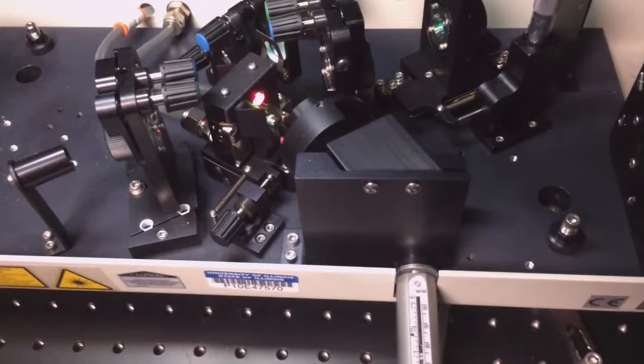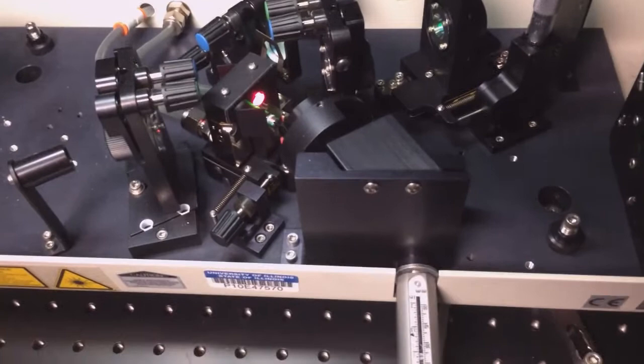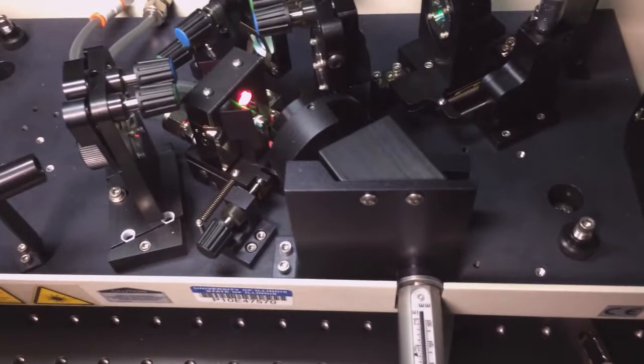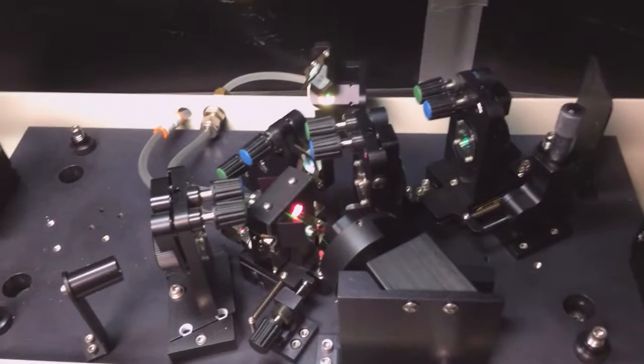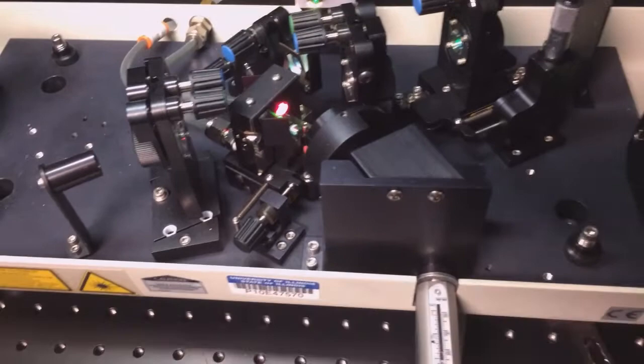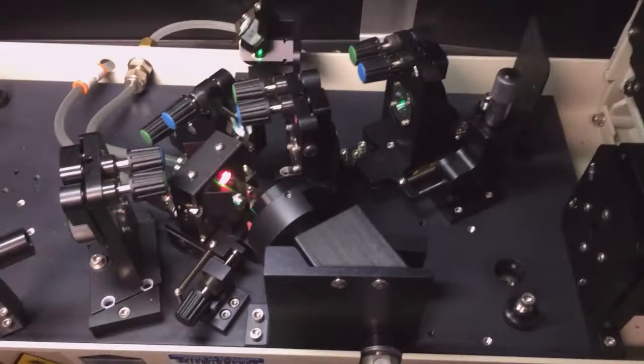So after lasing is achieved upon some initial alignment, then it can be necessary to get better efficiency to slowly translate the output coupler and the back reflector through the mirrors so that the cavity mode aligns better with the 532 beam.